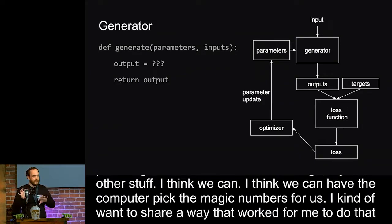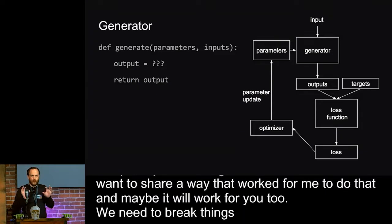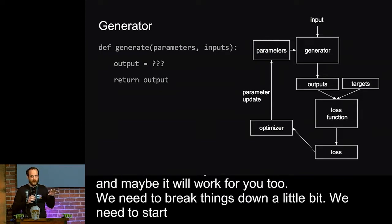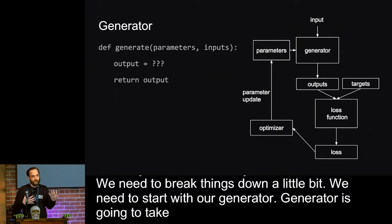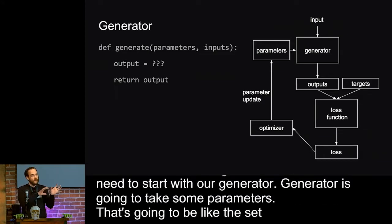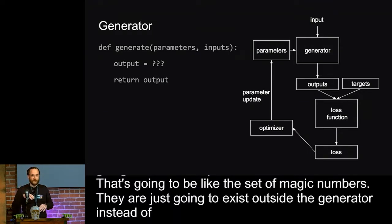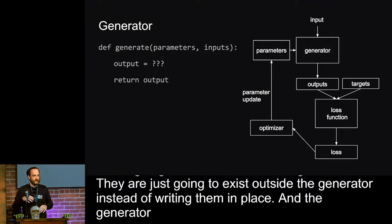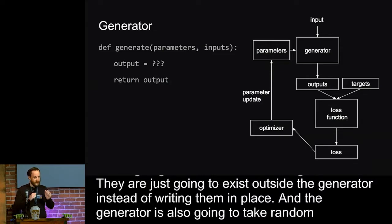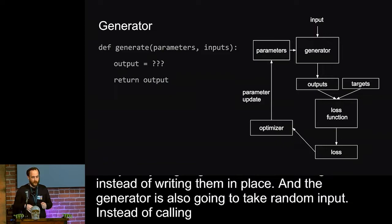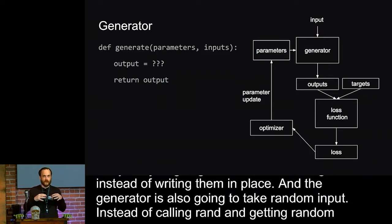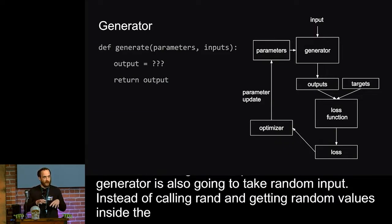So we need to break things down a little bit. We need to start with our generator. The generator is going to take some parameters. That's going to be like the set of magic numbers. They're just going to exist outside of the generator instead of writing them in place. And the generator is also going to take random input. Instead of calling rand and getting random values inside of the generator, we're just going to pass those in. And the generator is going to do its thing. It's going to produce the output or the artifact of the generator.